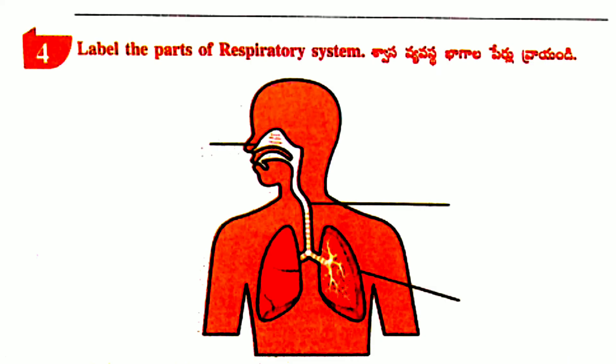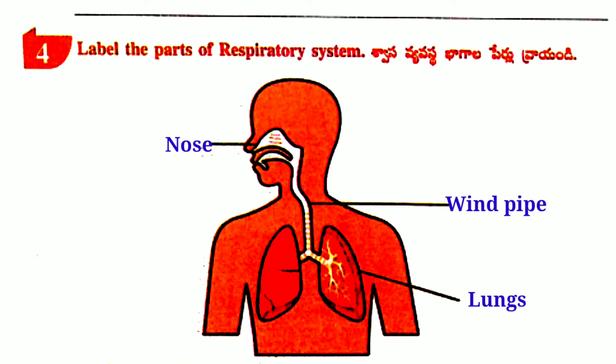Next, fourth activity: Label the parts of the respiratory system. Nose, Windpipe, Lungs. There we go.